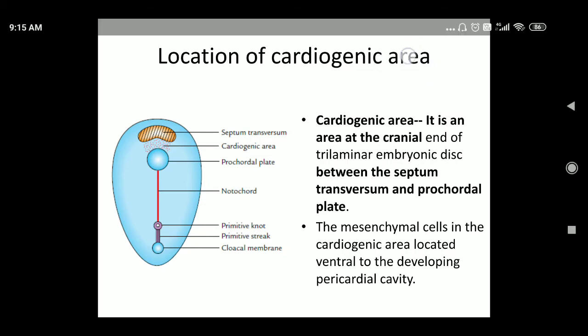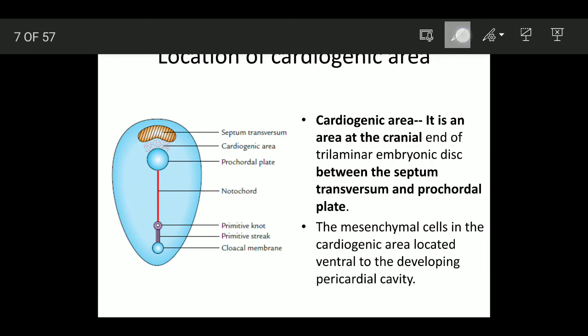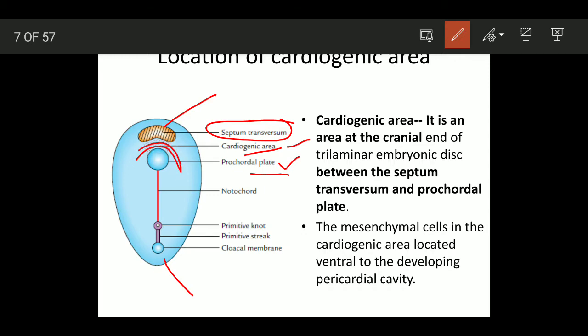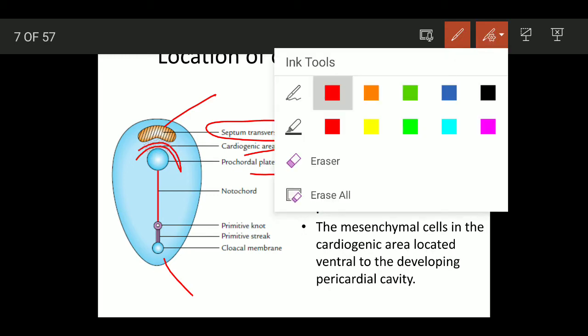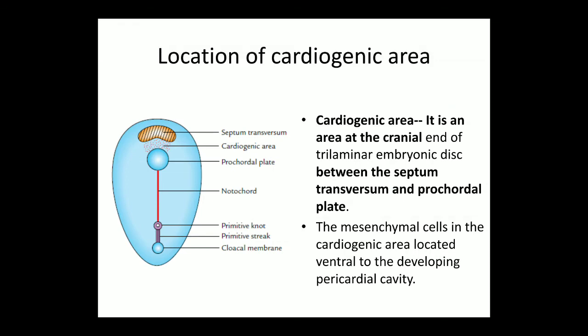Here you can see the cranial end and the caudal end of the embryo. At the cranial end you can see the septum transversum, and just caudal to the septum transversum you can see the cardiogenic area. So the cardiogenic area is present between the septum transversum and the prechordal plate, arranged in a horseshoe shape at the cranial end of the embryo.